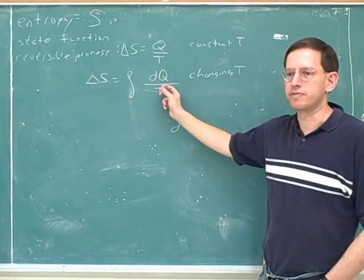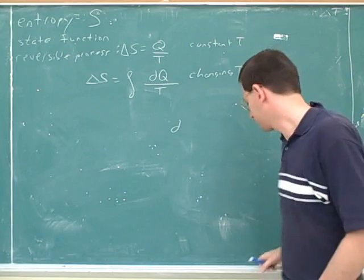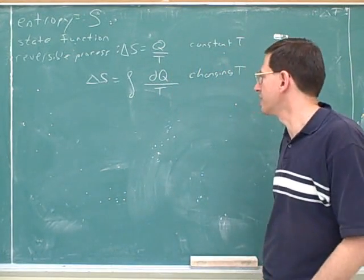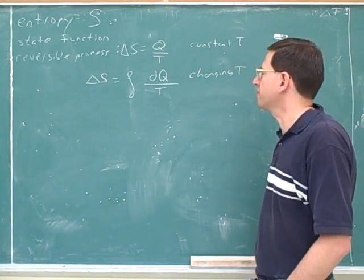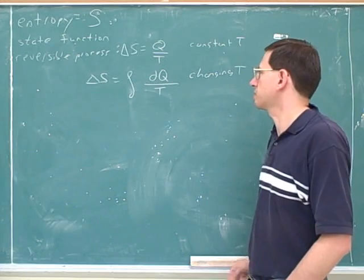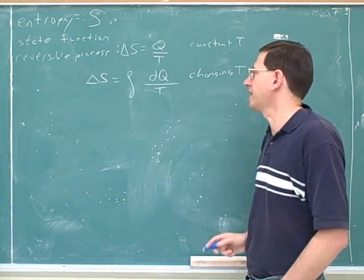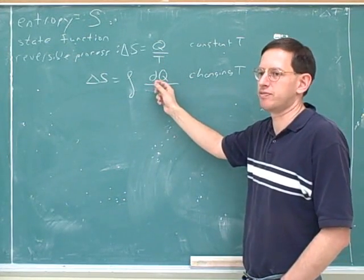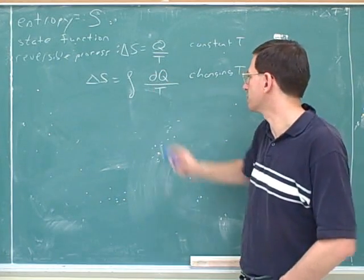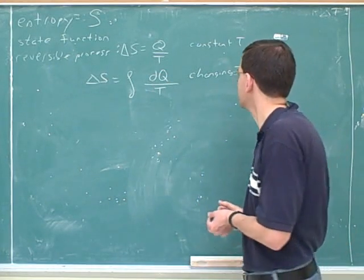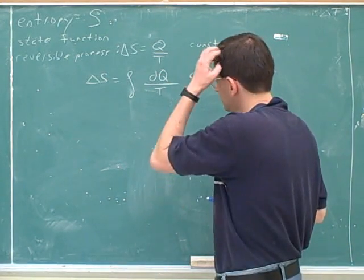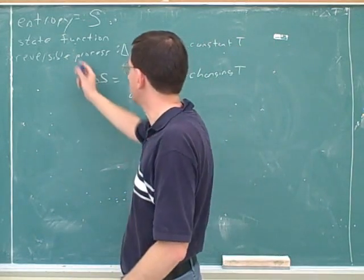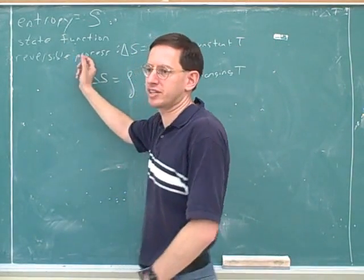So this is the formula we would use for changing temperature. This is a trick you're going to see much more next semester, where again you'll be given a formula that works when a variable is constant, and then you'll see how to use calculus to generalize it for when the variable is not constant by focusing on small intervals. Both of these formulas apply to reversible processes.